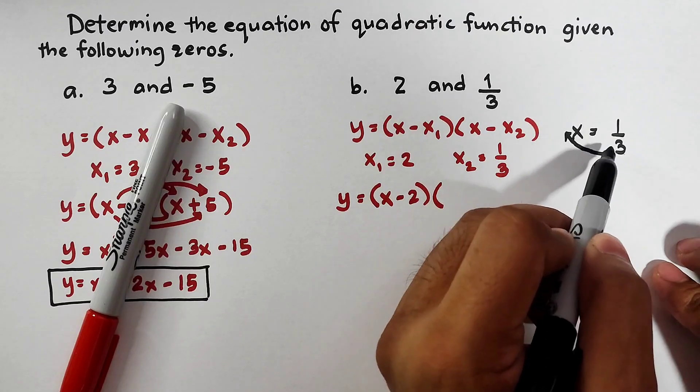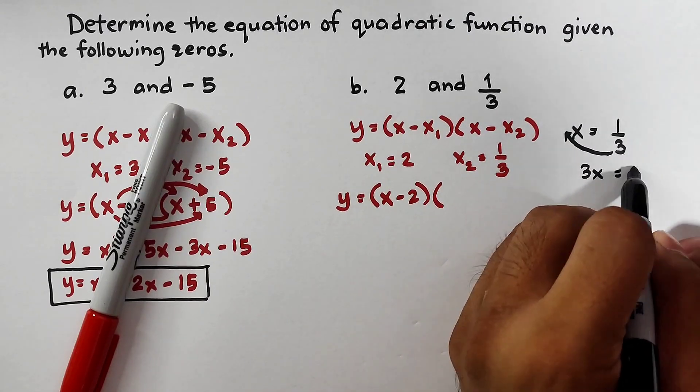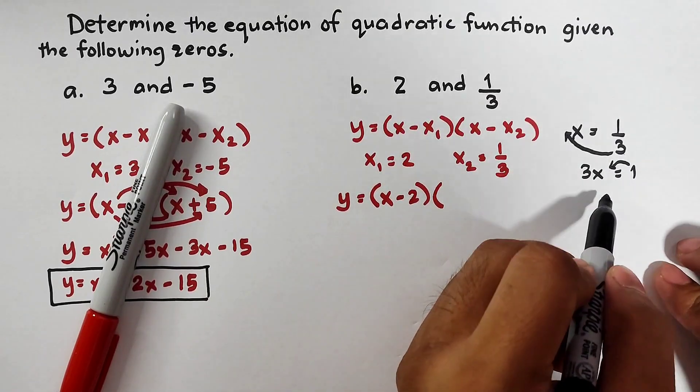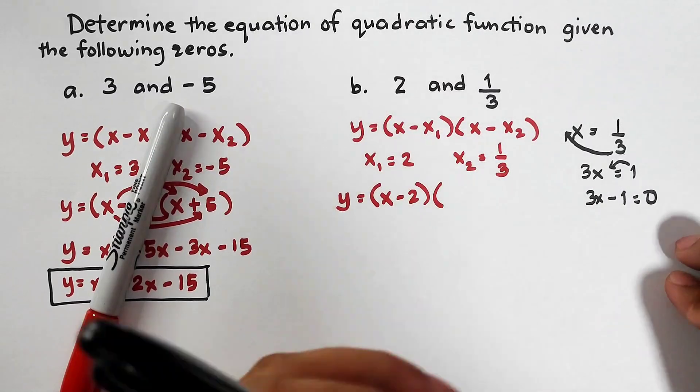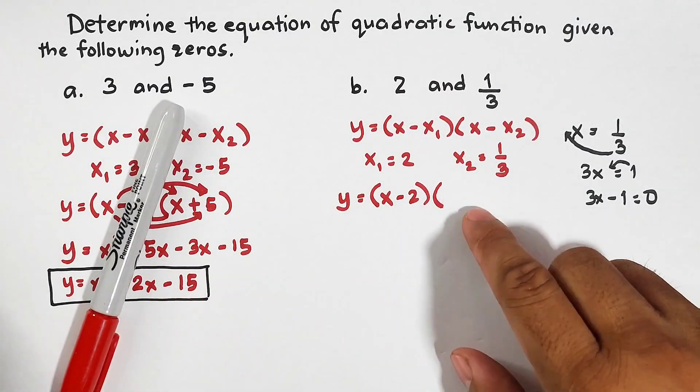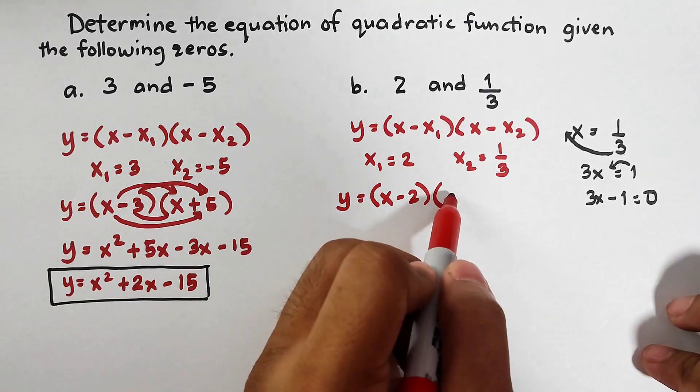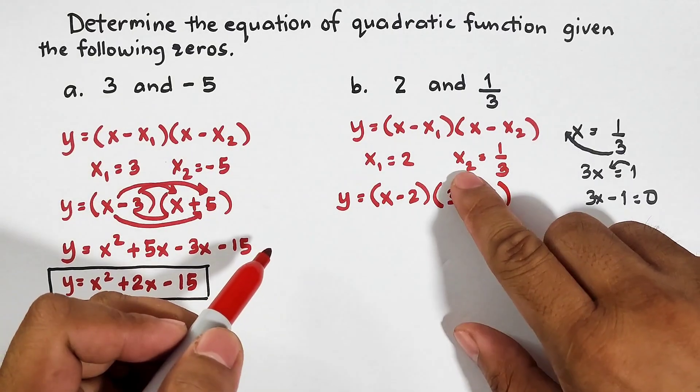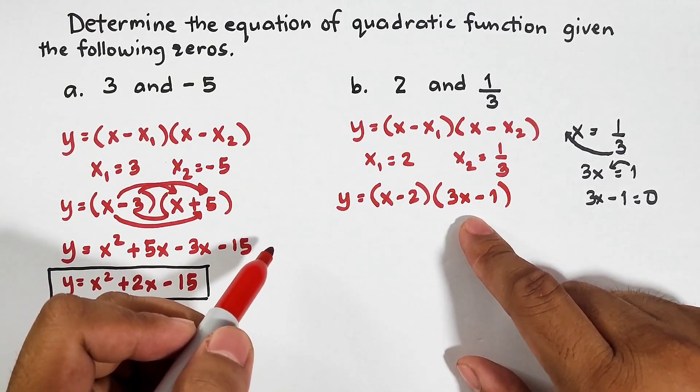Multiply x and 3. That would be 3x and then equal to 1. Then after that, transpose 1 here to the other side of the equation. It will become 3x minus 1 is equal to 0. So, what we're going to do here for this part is that we will put here 3x minus 1. So, this x sub 2 is equal to 1 third is the same as 3x minus 1. Now, apply foil method.